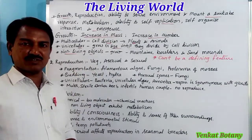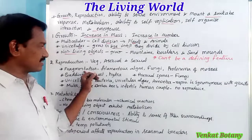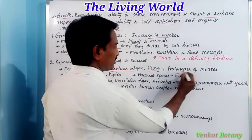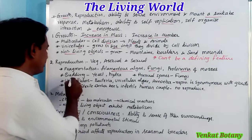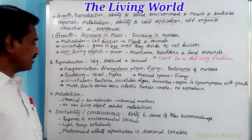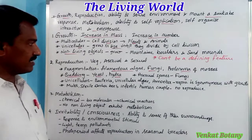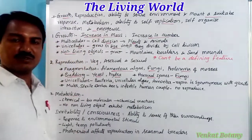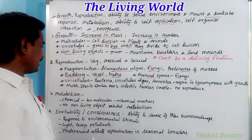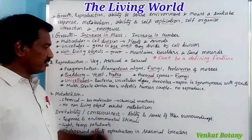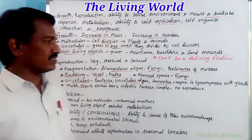Reproduction is of three types: vegetative, asexual reproduction, and sexual reproduction. Fragmentation occurs in filamentous algae, fungi, and protonema of mosses. Budding occurs in lower organisms like yeast and hydra. In unicellular organisms, asexual reproduction is linked to growth.